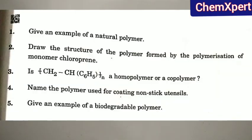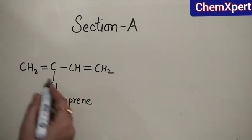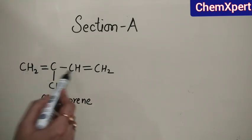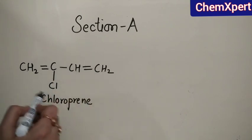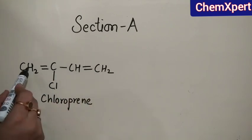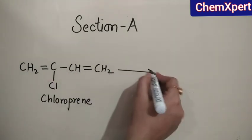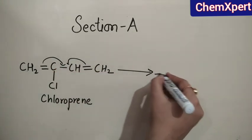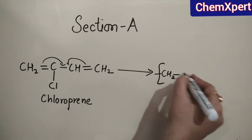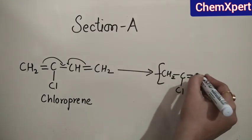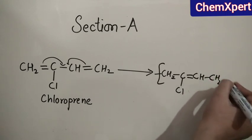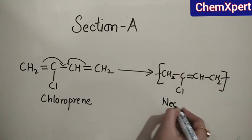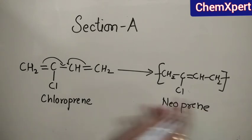The next question is: draw the structure of the polymer formed by the polymerization of the monomer chloroprene. The structure of chloroprene is 1,3-butadiene where the second position is for chlorine, so the name is 2-chloro-1,3-butadiene. On polymerization, the bonds shift and the structure becomes -CH2-C(Cl)=CH-CH2-, which is known as neoprene. We need to draw the structure and write its name.